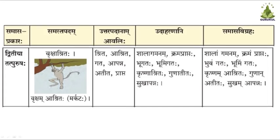Tritiya Tatpurush Samasah: when Sampanna, Rahita, Hena, Vikala, Varjita, Yukta, Sadrusha, or Adya are Uttarpad, then the Samas is Tritiya Tatpurush Samasah. In this Samasah, the Purvapat having Kartrivachak or the instrument of action (Karanvachak) is often a Samasavit Dhatu Sadhit Visheshana.